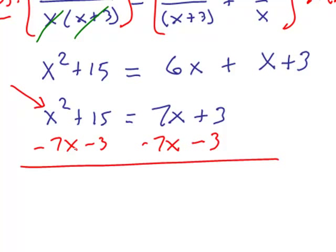On the left side, we want to write things in descending order. The x squared is first, and the minus 7x is next, and then 15 minus 3 is plus 12, is equal to 0 and 0 again, and that's exactly what we wanted, was 0 on one side, in this case, on the right side.